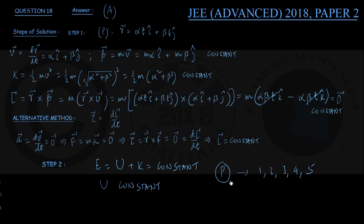However, this matching of motion P with all 5 elements appears in both options A and B of the question. So we are not yet done. We now need to consider motion S and check whether angular momentum remains conserved for that motion.